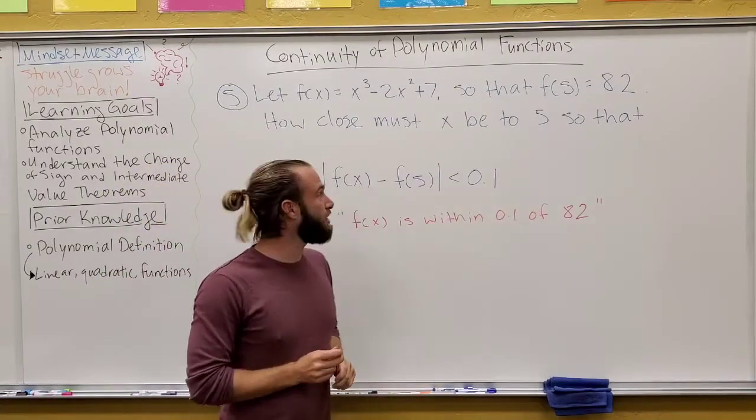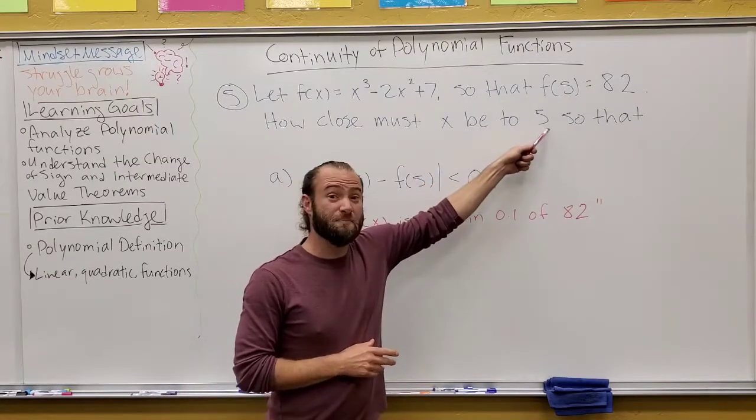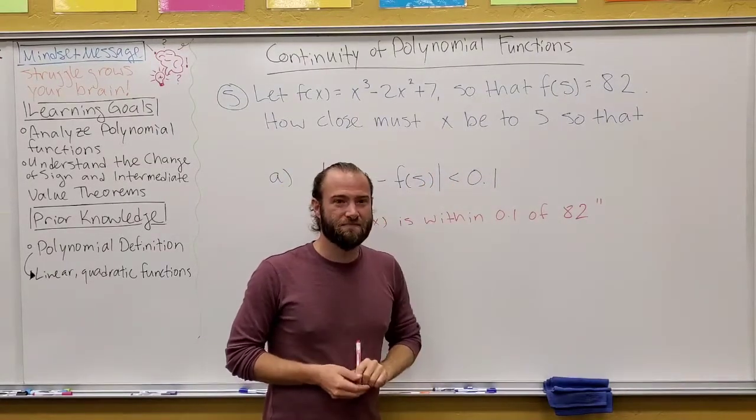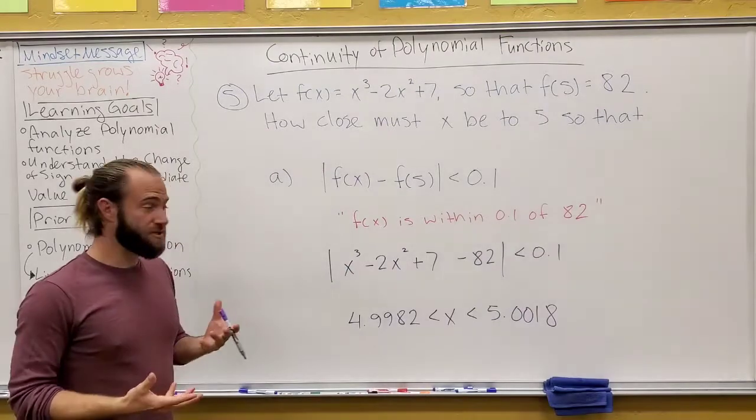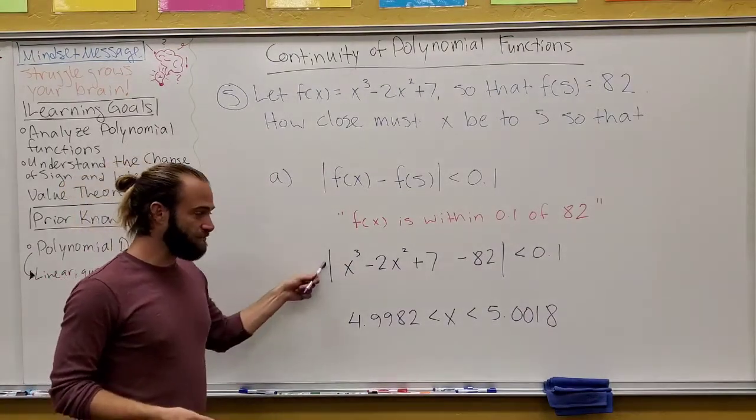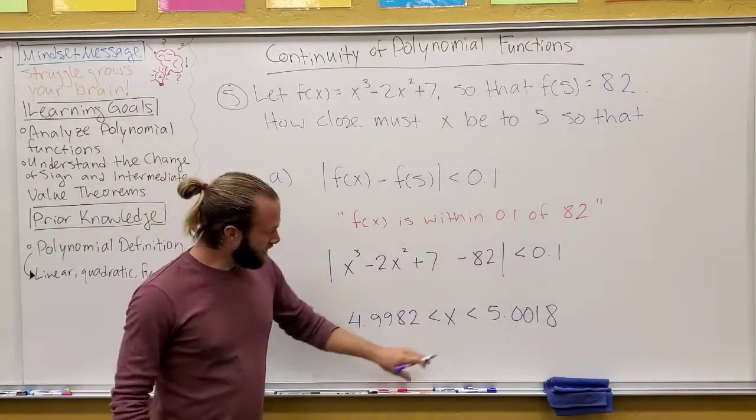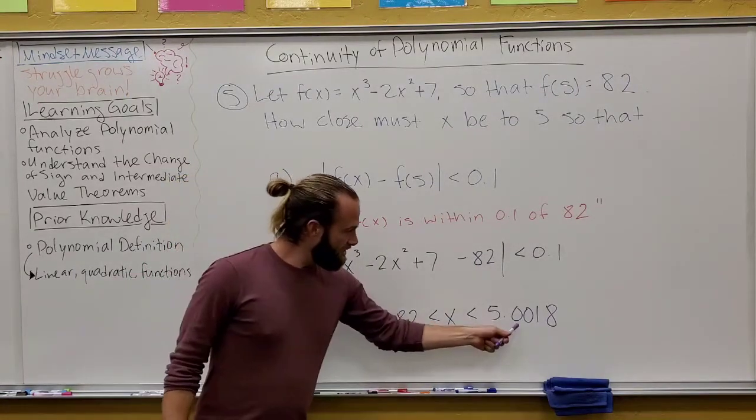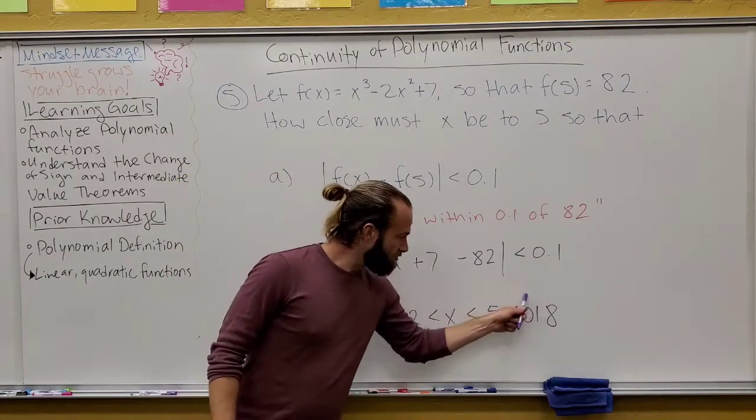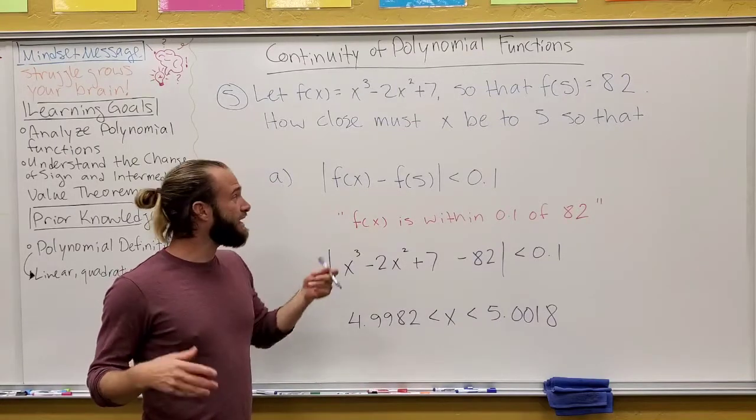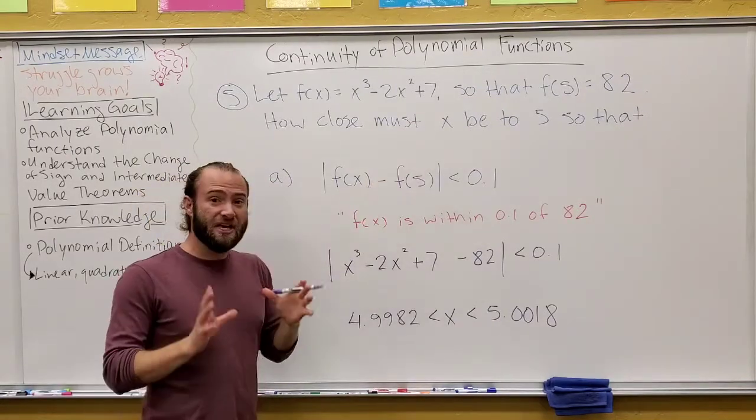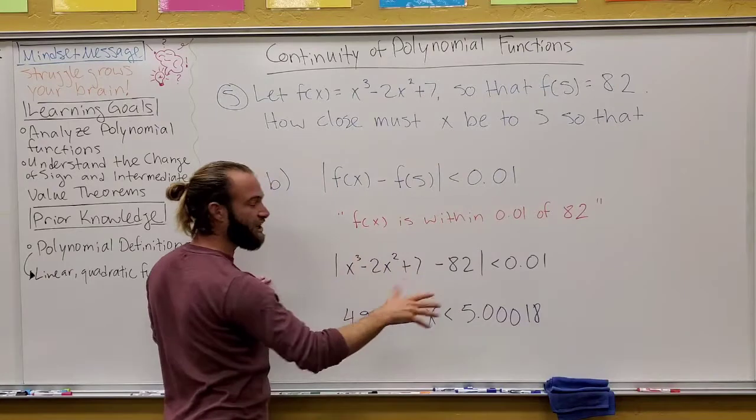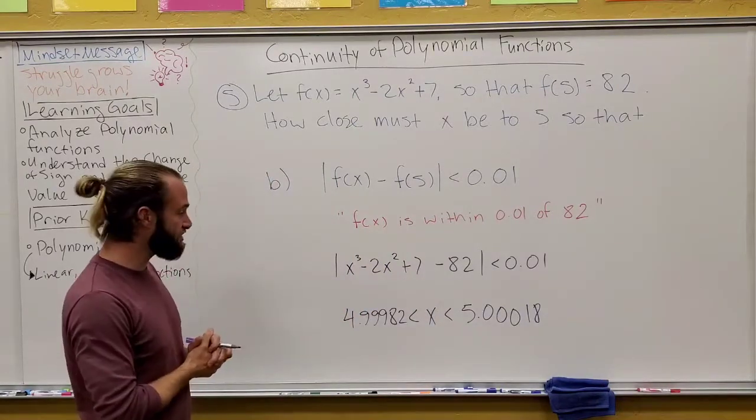So here's a simple absolute value equation. Solve the absolute value of x minus 3 equals 8. You kind of have to break this into its pieces and what it means. Remember, this means the distance from something to 3, right? So what we're saying is, whatever makes this equation true, it has a distance away from 3 equal to 8. So I need to be 8 away from 3, and that will get me my x.